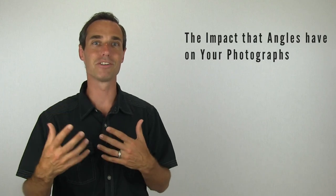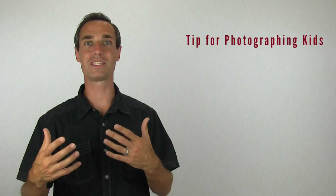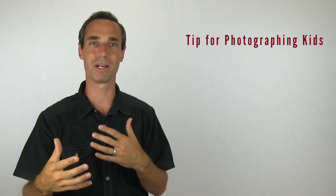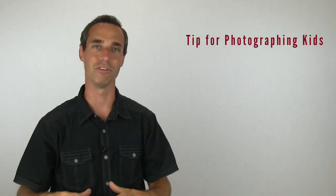And so that was the first tip on just different angles and perspectives, the impact that angles and perspectives can have on your photographs. And so next let's look at a quick tip for taking pictures of kids. Now, earlier I mentioned that eye level is not a good way to take pictures, but when you're taking pictures of kids, you do want to get to their eye level.